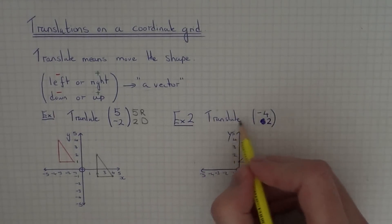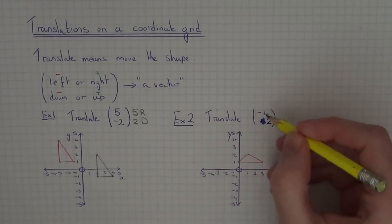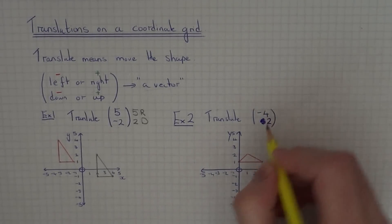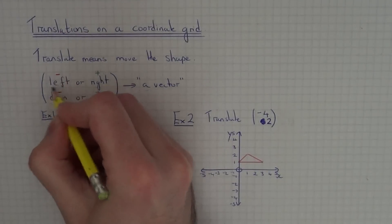This time we need to translate this triangle by the vector minus 4 plus 2. The top number is minus 4, so this means move the shape 4 left.